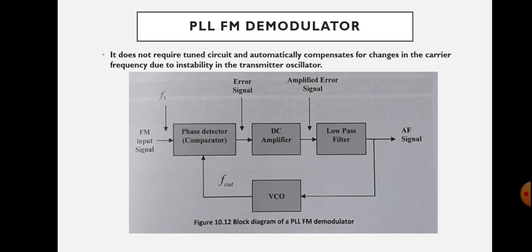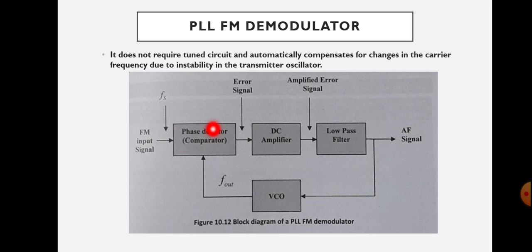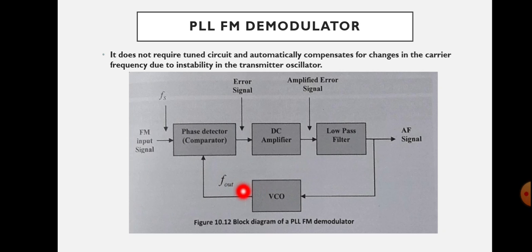Let us see the block diagram of the PLL FM demodulator. Here there will be an FM input signal having the source frequency FS. It is given to the phase detector, which is actually the phase comparator. The input given to this phase detector also comes from the VCO.